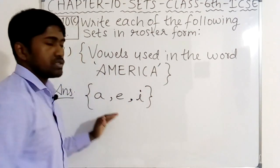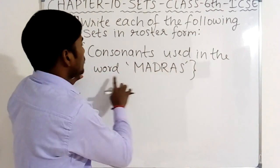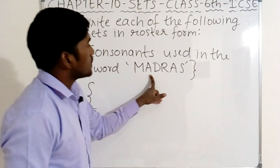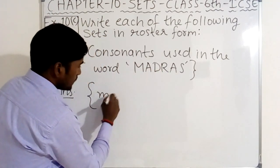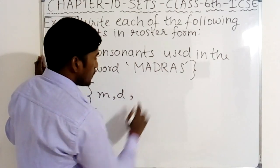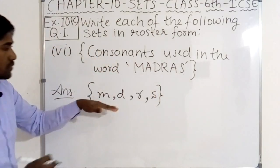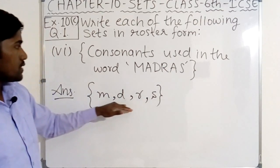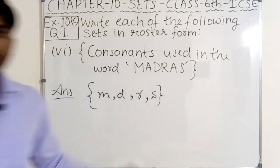Now the sixth point. What is given? Consonants used in the word Madras. Now first of all you have to open the curly braces, then you have to write each consonant used in the word Madras in small letters. M small letter, then comma, then D small d, then comma, R small r, comma, S small s. These are the consonants used in the word Madras. M comma D comma R comma S. These consonants are used in the word Madras. The set is written in roster form.